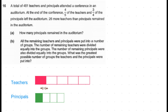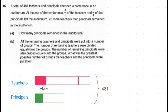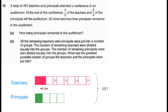The total number of teachers and principals in the auditorium was initially 481, and that is given, so we mark that. We know at the end there were 26 more teachers than principals, which means each box of the teachers is 26 more than one unit. So we mark them in the model.